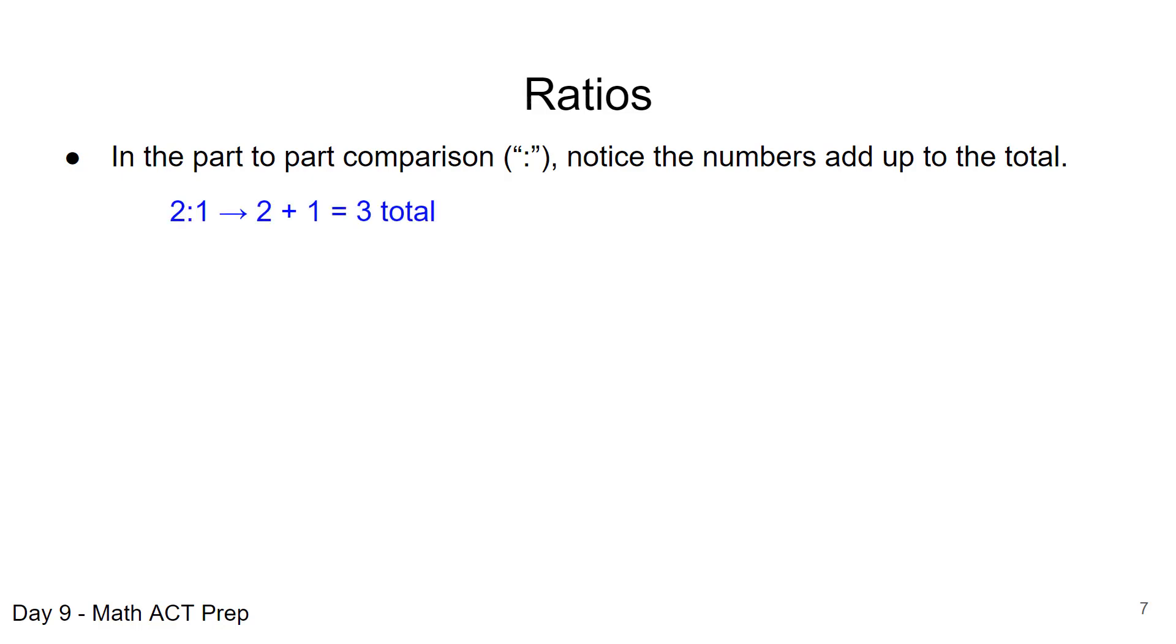So we had the 2 to 1, we add up 2 plus 1 and we get 3. And just as a fraction can be reduced, we reduce that 18 out of 27 to 2 thirds. We can do that in a part-to-part ratio.